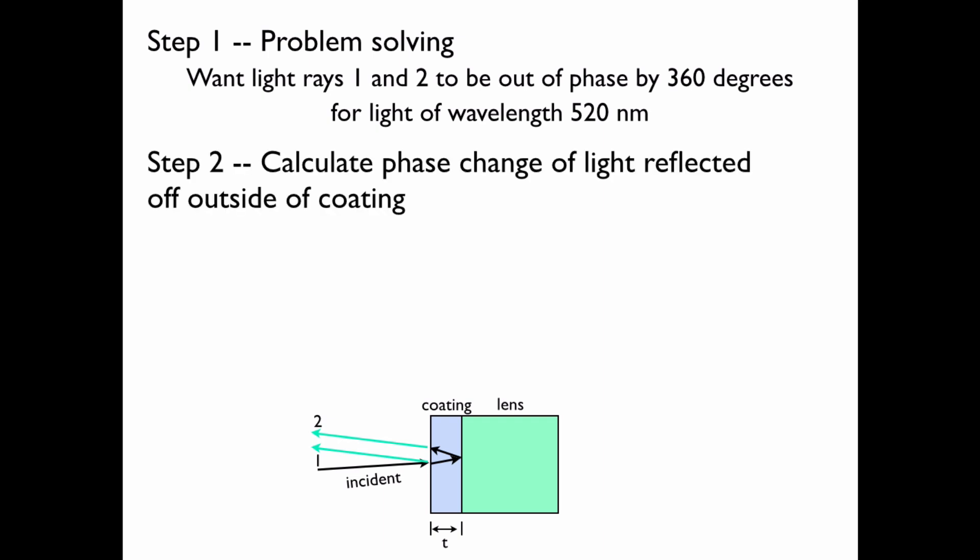First, let's calculate the phase change of the light reflected off the outside of the coating, that is light ray 1. Light that reflects off a medium with a higher index of refraction has a phase change of 180 degrees. So, independent of the wavelength, all frequencies of light that reflect off the coating have a phase change of 180 degrees.